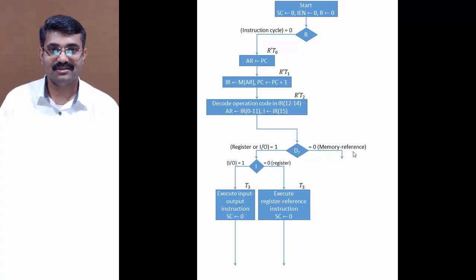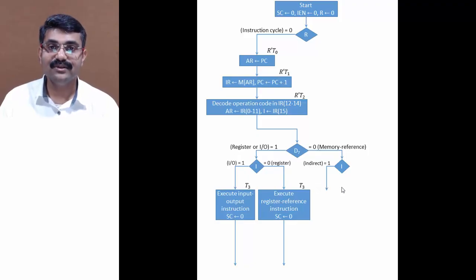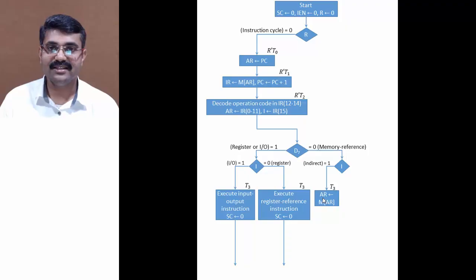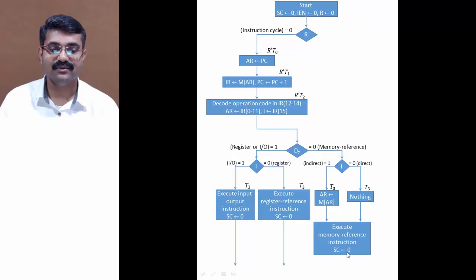If D7 is 0, it is a memory reference instruction — any of D0 to D6 can be 1. We then check the I bit for addressing mode. If I is 1, it is indirect addressing: at time T3 the effective address is fetched from memory and stored into AR. If I is 0, it is direct addressing — nothing extra at T3. In both cases the instruction executes and SC is set to 0.